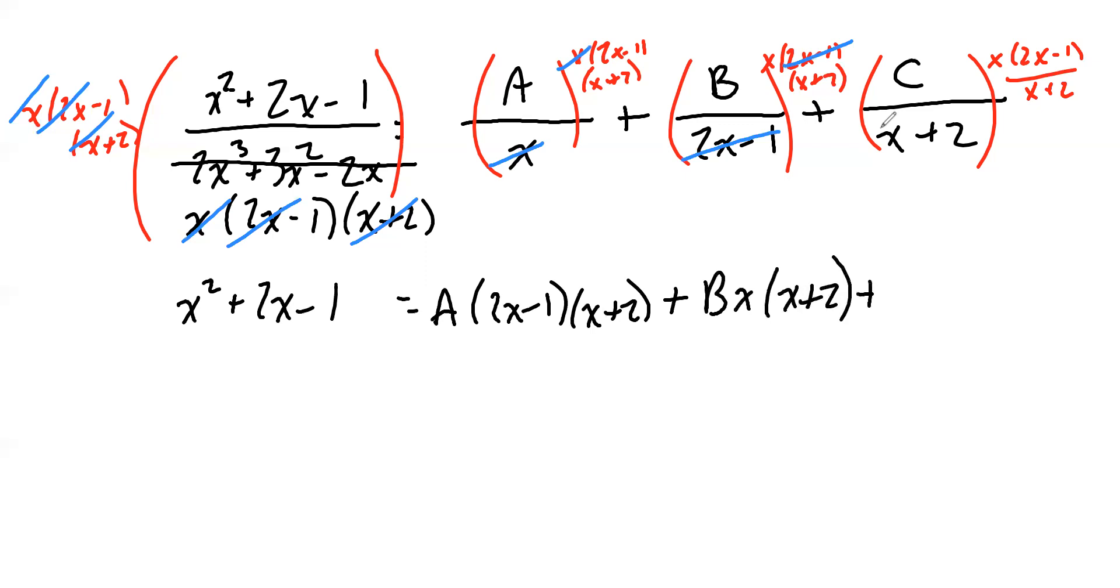And on the third fraction, the X plus 2s cancel. On all of these multipliers, they're all just products of things. It should not be a fraction bar. It should have been a set of parentheses. But I digress. The X plus 2s cancel, and that leaves us with the X, the C, and the 2X minus 1.